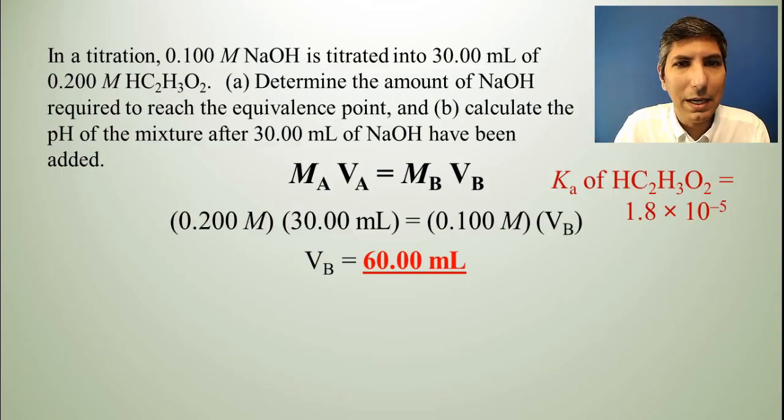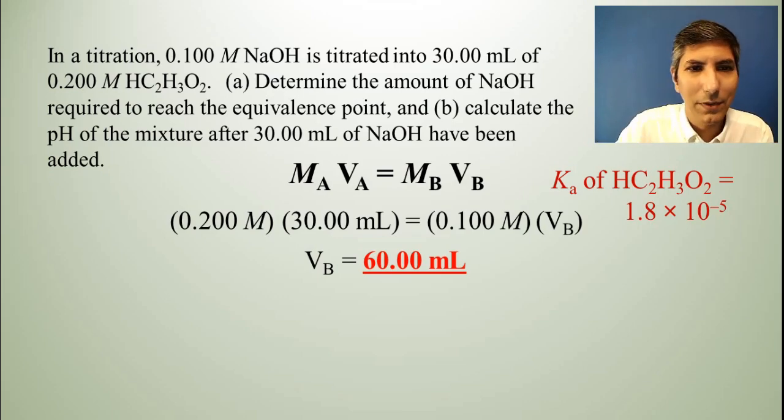Now part B says calculate the pH of the mixture after 30 milliliters have been added. Now it takes 60 to get to the equivalence point. 30 milliliters is the halfway point. Now in acid-base titrations, when you have something weak and something strong being added, the halfway point is a very special point from a stoichiometric point of view.